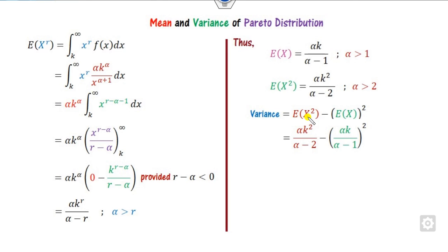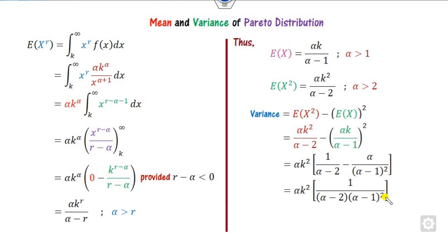You can find the variance by using E(X²) minus E(X) whole square. You can substitute this value. Alpha is common, k square is common. What is remaining? This is alpha minus 2 and this is alpha upon alpha minus 1 whole square. Now once you open this bracket, you can take the LCM. This is minus 2 alpha plus 1 minus alpha square plus 2 alpha. You can see 2 alpha will be cancelled, alpha will be cancelled. It will be 1 upon alpha minus 2. So this value is defined since alpha is greater than 2.